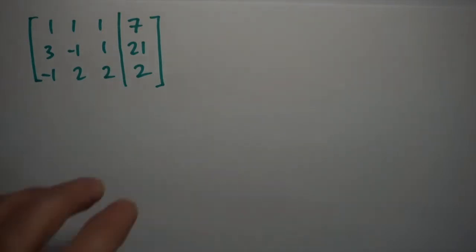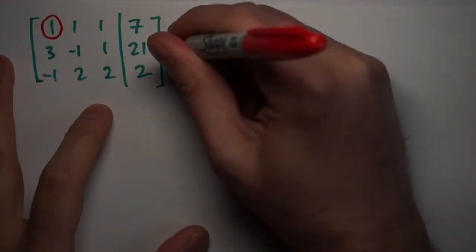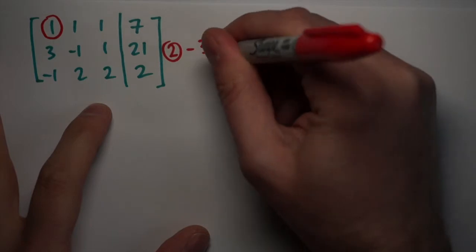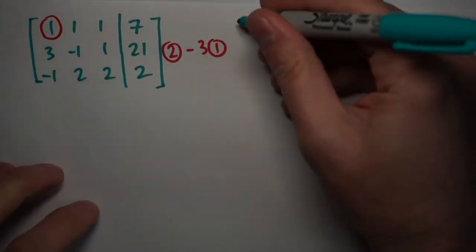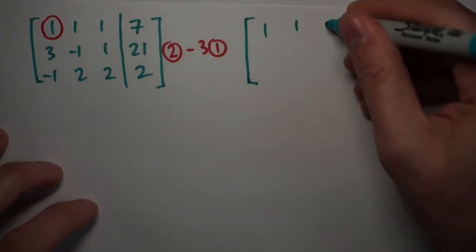The goal of Gauss-Jordan elimination is to make this matrix into diagonal form, which is ones along the diagonal and zeros everywhere else. So we start by taking the upper left number, the one, and using it to get rid of the numbers below it, the three and the negative one. The first step is to take row two and subtract three times row one, because if I do that it'll make the three disappear.